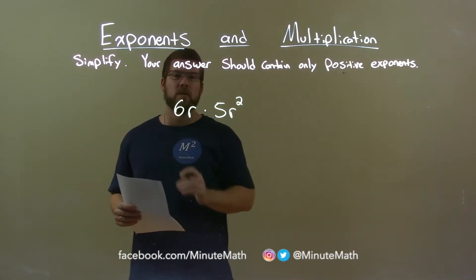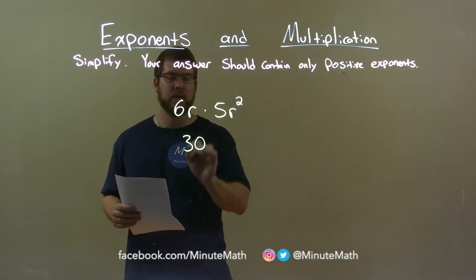Well, we first look at the coefficients. 6 times 5 is 30, so we have 30 here.